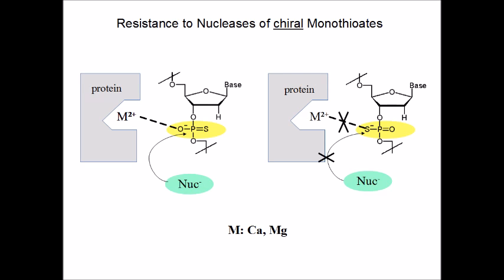Not all Lewis acids work equally well as co-catalysts for nuclease digestion. Generally, hard Lewis acids like calcium and magnesium are most commonly encountered as co-catalysts. The interaction of chiral phosphorothioate-bearing internucleotidic linkages with nucleases reveals also that the phosphorus-oxygen of the internucleotidic linkage must interact with the protein-bound Lewis acid. When such a chiral phosphorothioate is fixed so that the sulfur residue comes close to the protein-bound Lewis acid, no hydrolysis is observed.